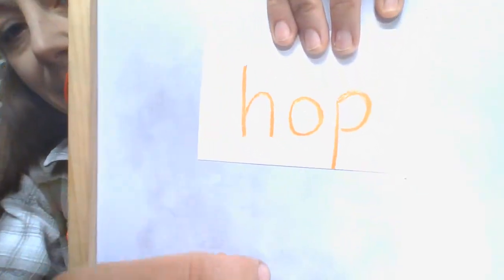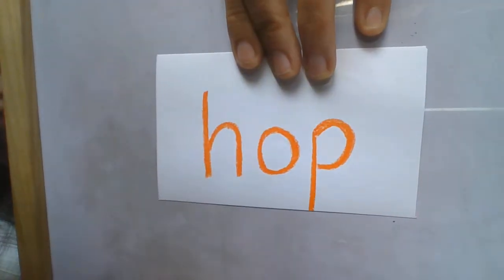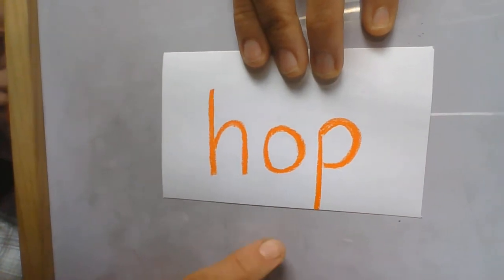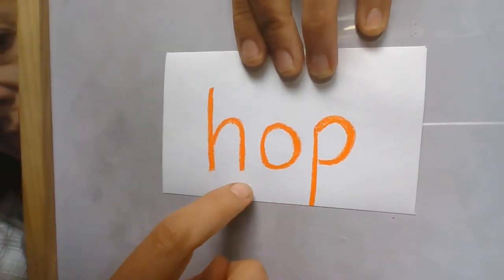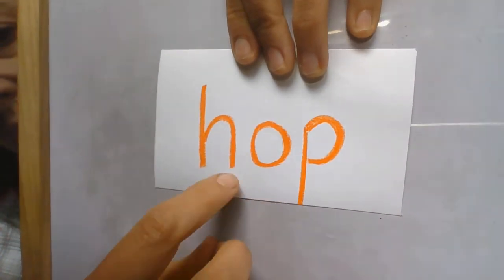Let's try another one. That E is so bossy. We have these letters. Let's read them together. What sounds do they make? H, ah, p, hop. What's the word? Hop.